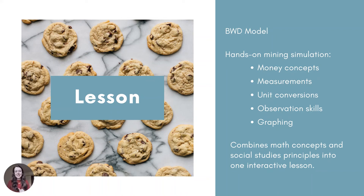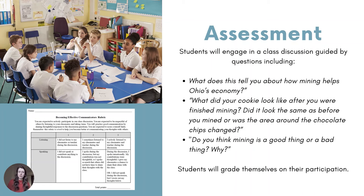Students will manage their play money to purchase mining materials and chocolate chip cookies. They will measure, observe, convert units, graph their findings, and then mine for chocolate chips in their cookies. This combines math concepts and social studies principles into one interactive lesson, while also introducing students to concepts of economics and money management — specifically, how can our natural resources help us make money? Upon completion of the mining simulation, students will engage in a guided class discussion, leading students to reflect on mining's effect on the economy as well as on the environment. They'll look at their cookie after they've mined it and see that it's kind of destroyed — we can't put it back together. How can we apply that same idea to the real world? What does mining do to the environment? Is that good? Is that bad? Why? So getting students' brains thinking and then having them communicate that with the group.